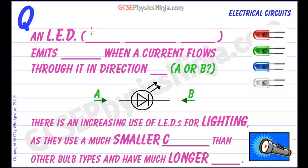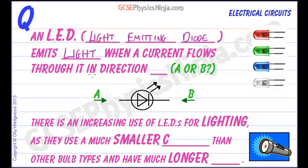An LED, which is a light emitting diode, emits light when a current flows through it in one direction. It's just like a diode, and you can always tell the direction that the diode will let current flow because the arrow shows us — so it will be in direction A.